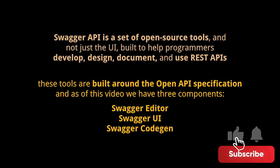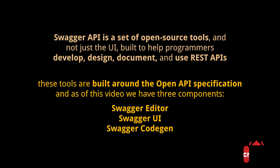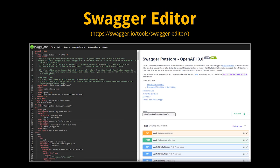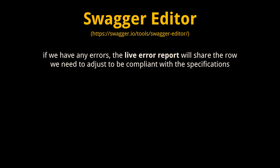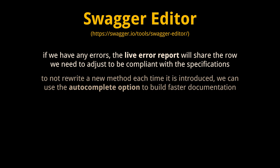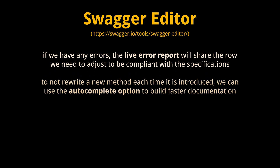As of this video we have three components: Swagger Editor, Swagger UI, and Swagger Codegen. Swagger Editor has an editor on the left panel where you can plug in all your requests and response data. The editor supports YAML or JSON format. On the right panel we can view the documentation as the end user will see it. If we have any errors, the live error report will share the row we need to adjust to be compliant with the specifications.